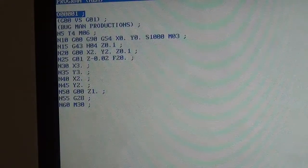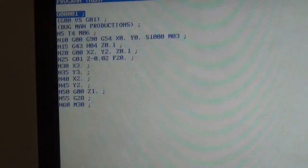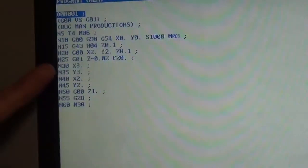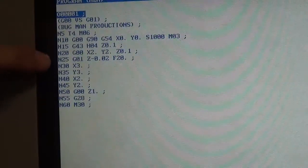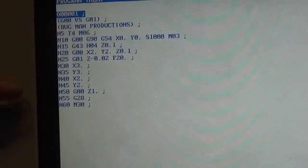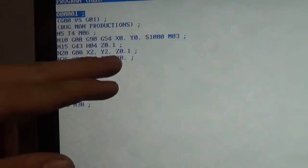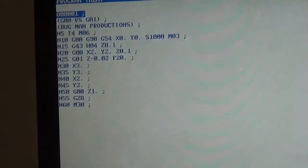Line N15 is my G43, calling up my tool icon for tool 4. Rapping down to a z of 0.1. In line N20 is where we actually started in the classroom. G00, x2, y2. Moving down to z of 100,000 above the part.